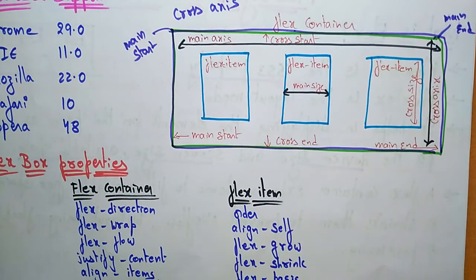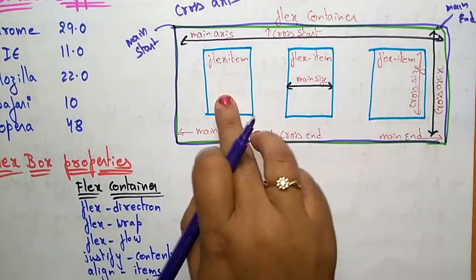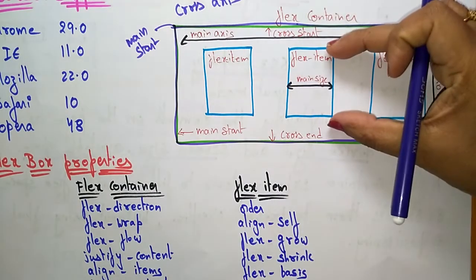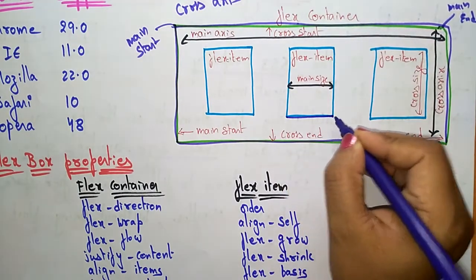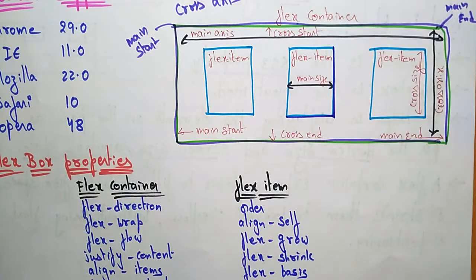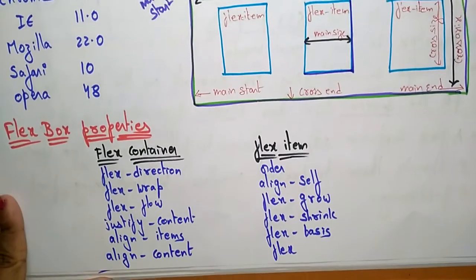On the main axis, the starting point is called main start and the ending point is main end. Similarly, the cross axis has cross start and cross end. Inside the container you have flex items — those items appear according to the main size (horizontal) and cross size (vertical). The key terms are: flex container, main axis, cross axis, flex items, main start, main end, cross start, and cross end.